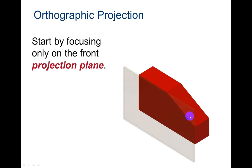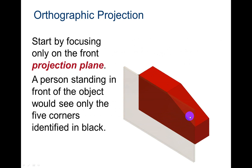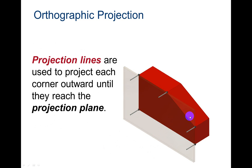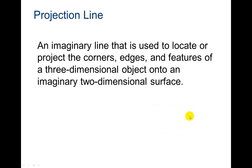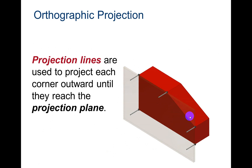So start by focusing on the front projection plane. The person standing at the front of the object would see only the five corners identified in black. And then projection lines are used to project each corner outward until they reach the projection plane. And then you would fill in these lines with object lines.